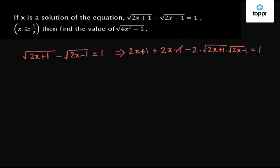Now minus 1 gets cancelled with 1, so we are left with 4x minus 2 into — multiplying these two terms — we get 4x squared minus 1, equals to 1.